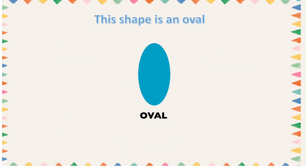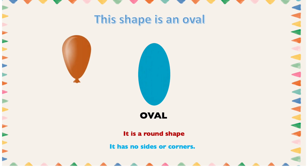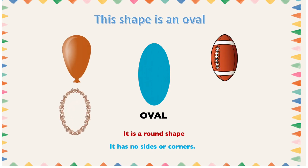This shape is an oval. An oval shape is round — it has no sides or corners. Objects that have an oval shape are a balloon, a mirror, an American football, and an egg. Thank you for listening. Please don't forget to like, share, and subscribe.